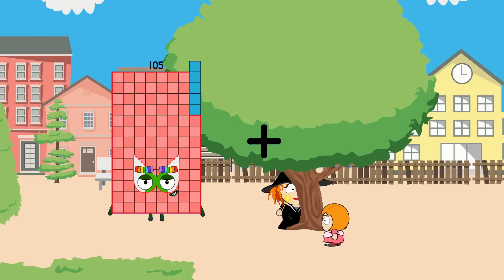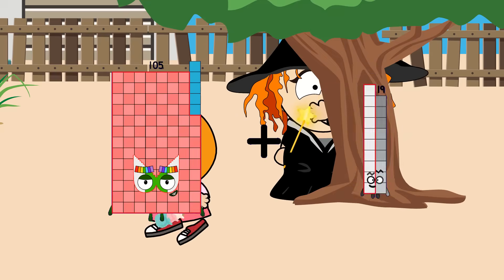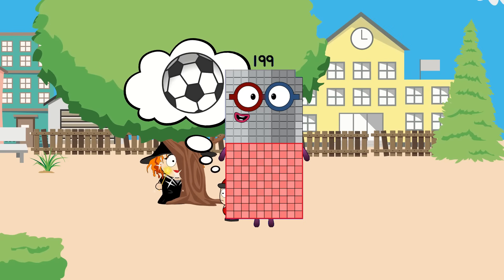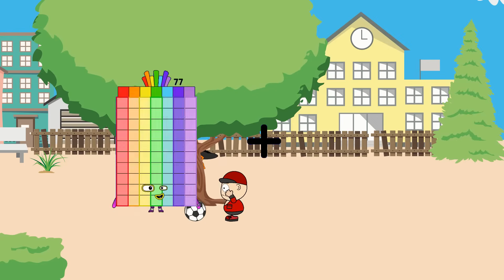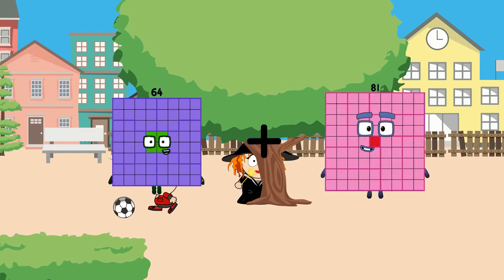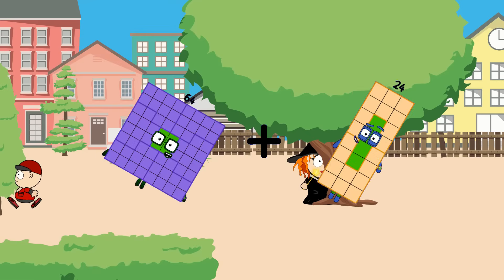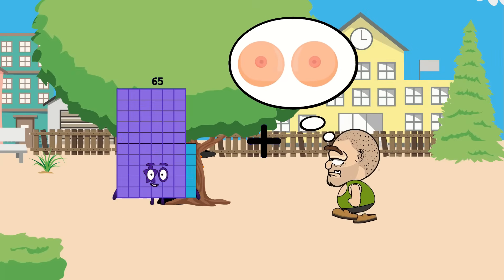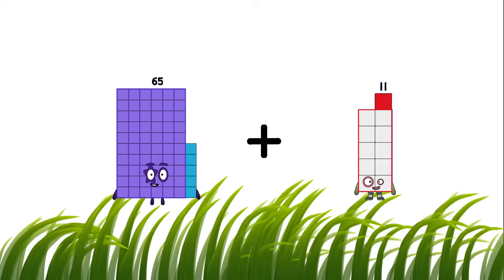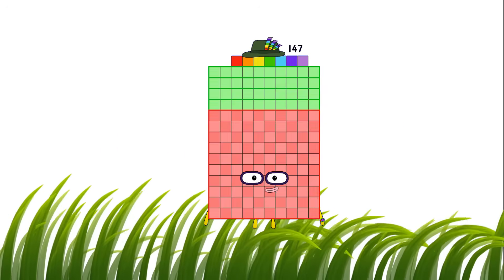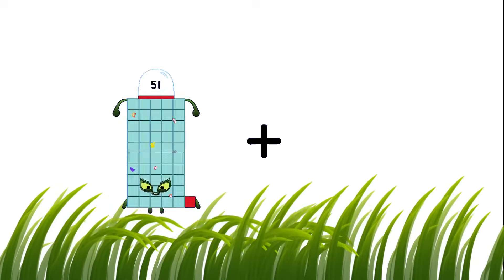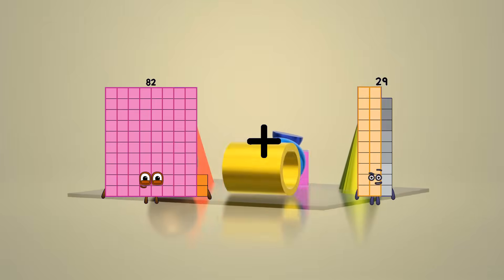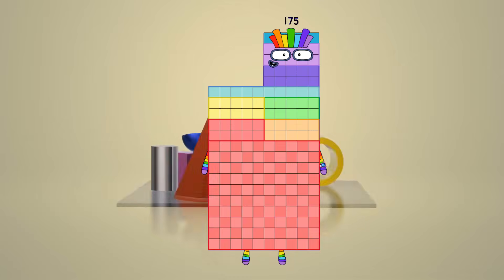105 plus 94 equals 199. 64 plus 24 equals 88. 65 plus 82 equals 147. 82 plus 93 equals 175.